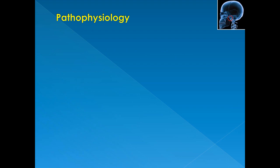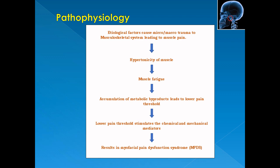The pathology of MPDS: all etiologic factors cause micro or macro trauma to the musculoskeletal system, resulting in hypertonicity of muscles. This hypertonicity leads to muscle fatigue and accumulation of metabolic byproducts like lactic acid, prostaglandins, bradykinins, and histamines. The accumulation of these chemical pain mediators lowers the pain threshold to mechanical and chemical stimuli, leading to MPDS.